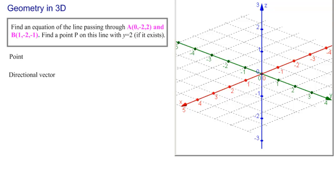Here's our three-dimensional space. Let's draw the point A, (0, -2, 2), and then the point B, which is (1, -2, -1). And we can see that there's a line, and that's what we need to find the equation of. But how do we do that?